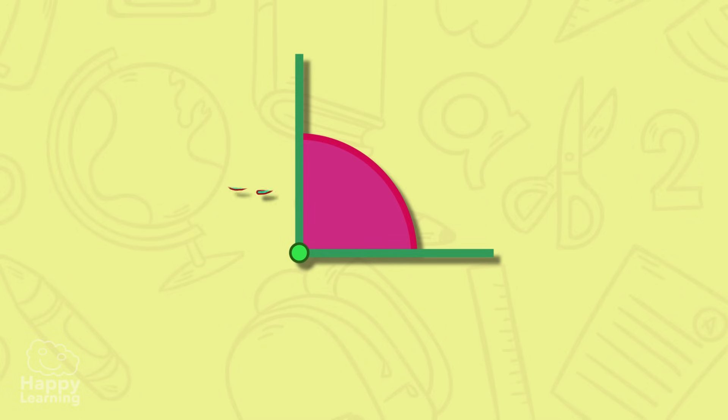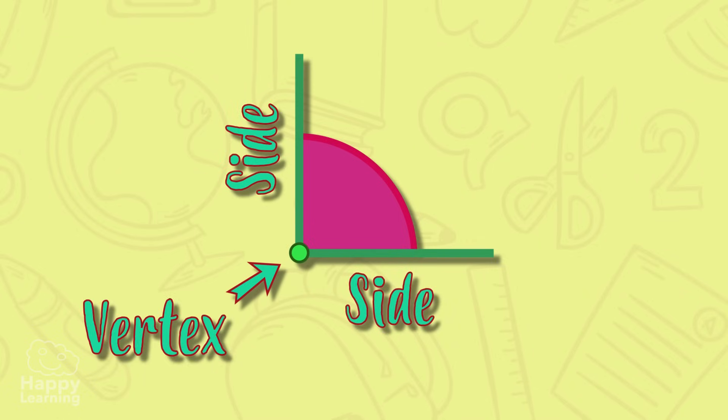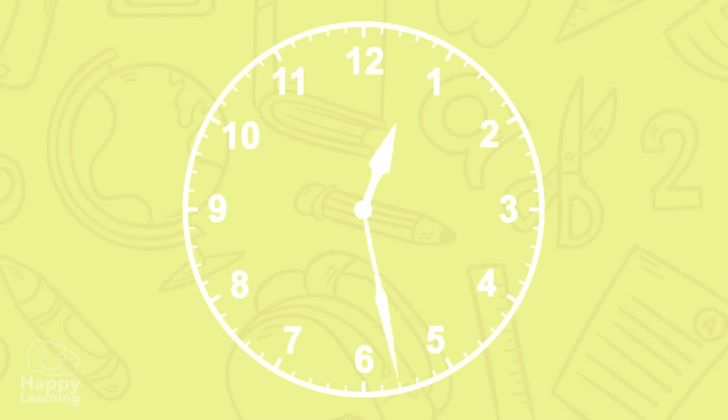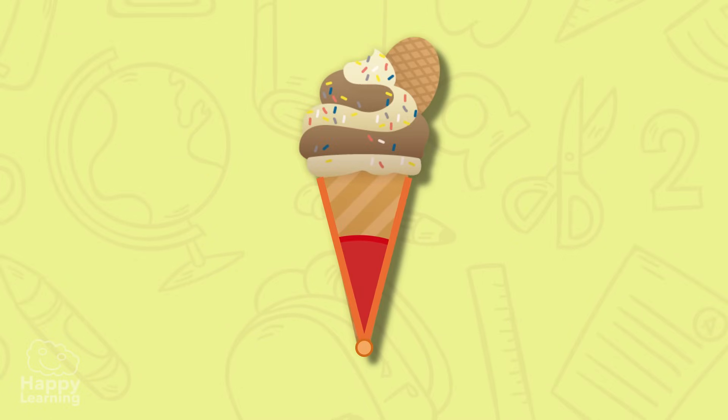that emerge from the same point called vertex. If you look around we are surrounded by angles like the ones this clock handles or an ice cream cone makes.